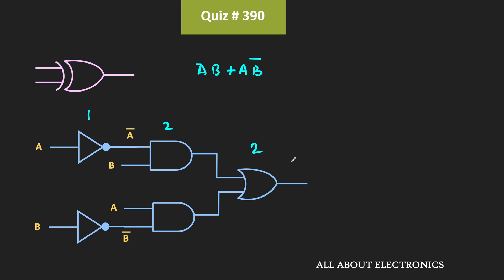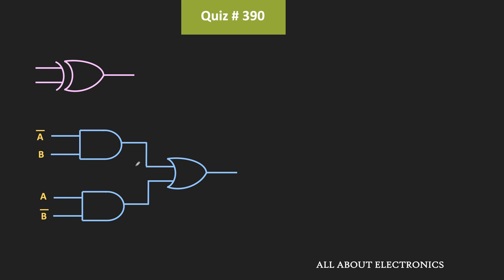However, in the question it is given that inputs are available in both true form and complemented form. That means there is no need to use a NOT gate, since A-bar is already available. Instead of using a NOT gate, we can directly apply A-bar and B-bar as inputs. In this case we only require two gate levels, so the propagation delay is two plus two equals four time units.